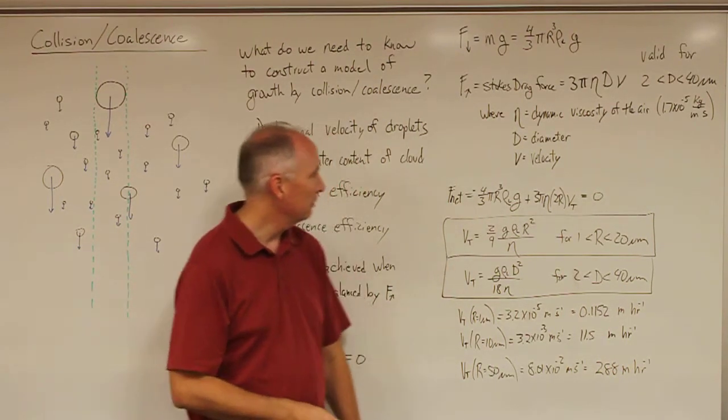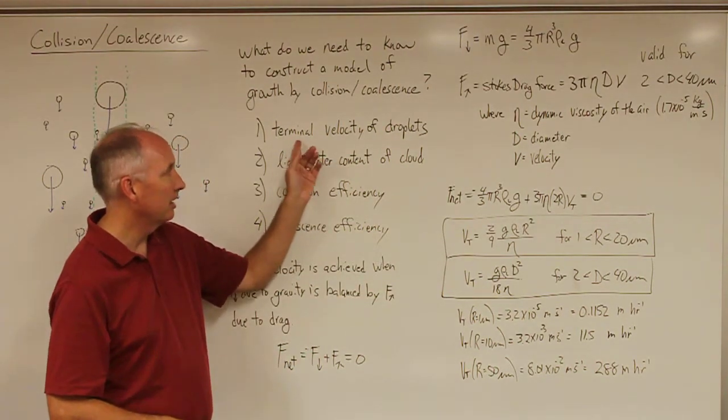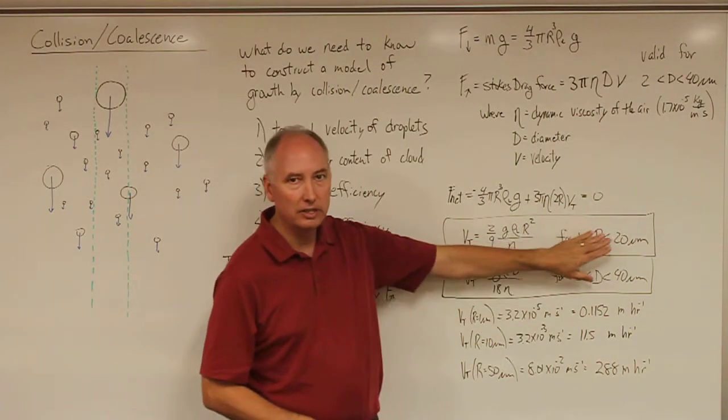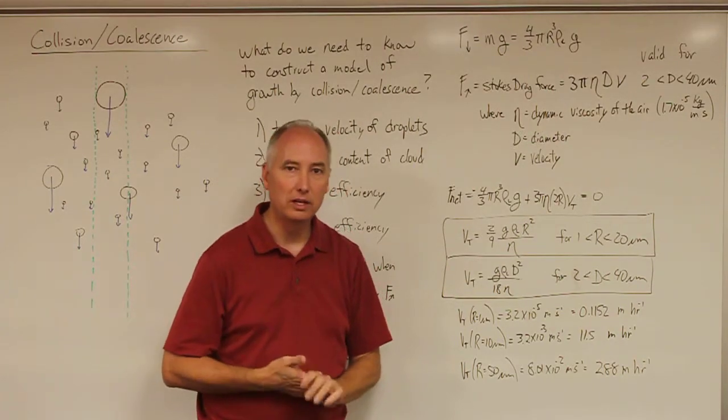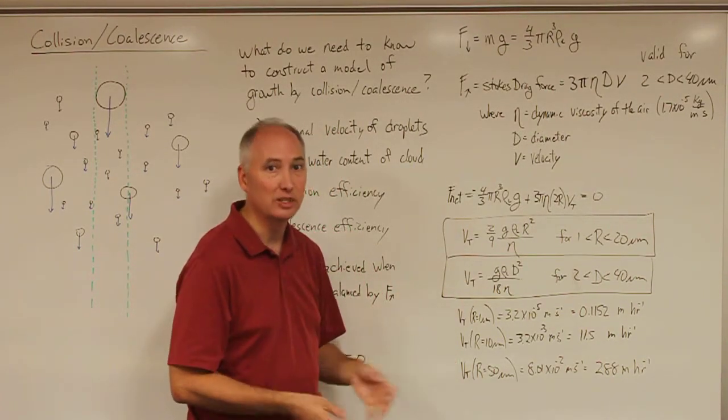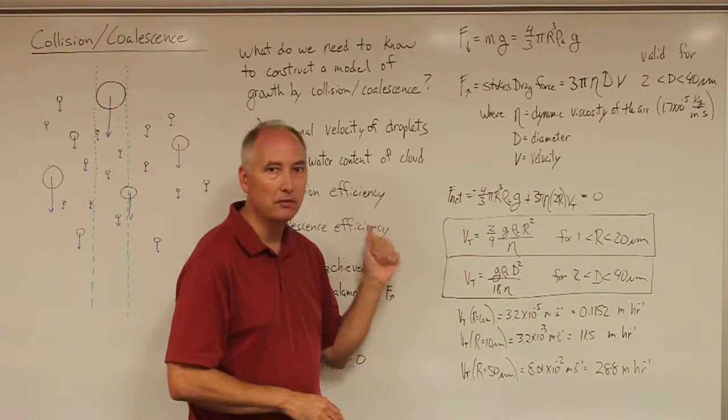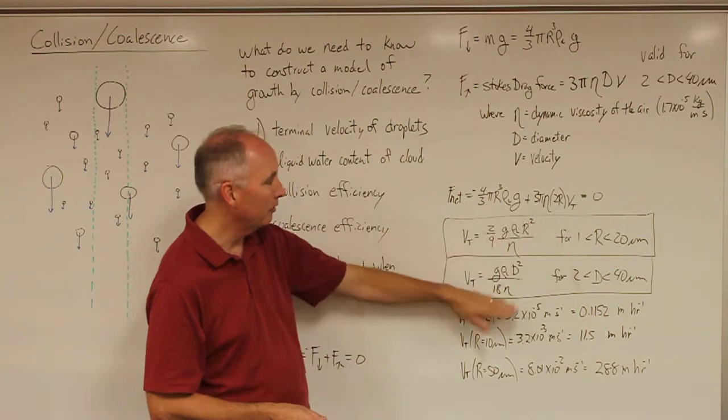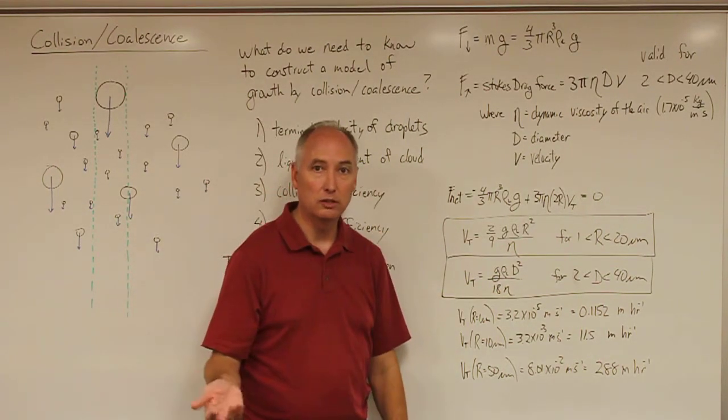The next step in this process is going to be trying to calculate the terminal velocity for droplets that are outside of these strict boundaries where we can use Stokes drag. We'll end up with an expression or a series of expressions that will describe the fall speed of droplets starting from all the way from very small cloud droplets all the way up to the largest rain droplets.